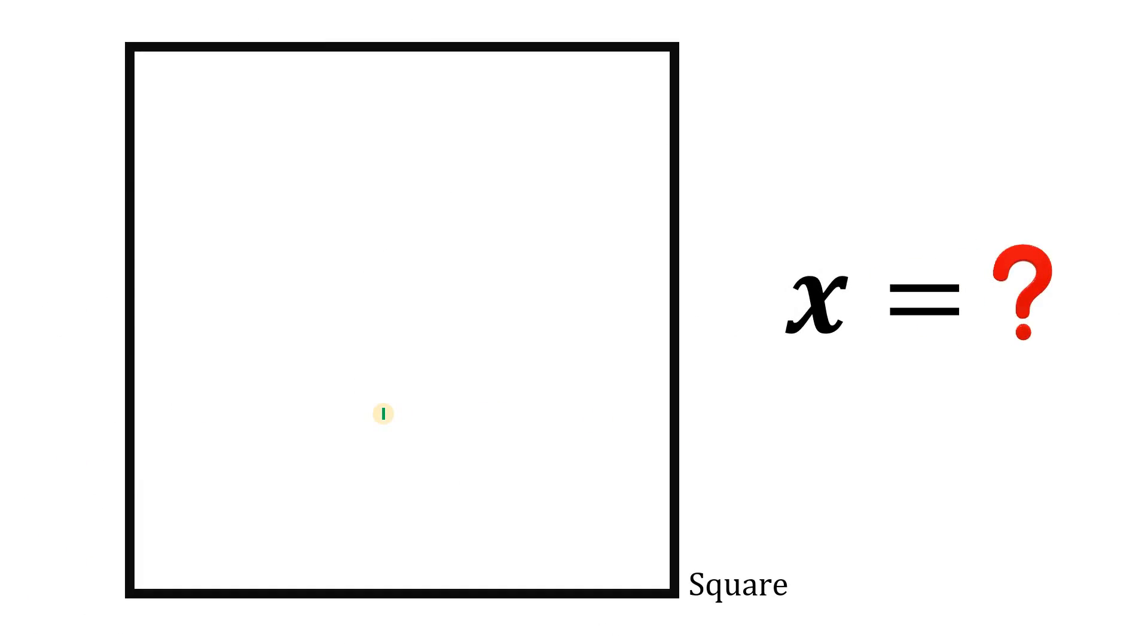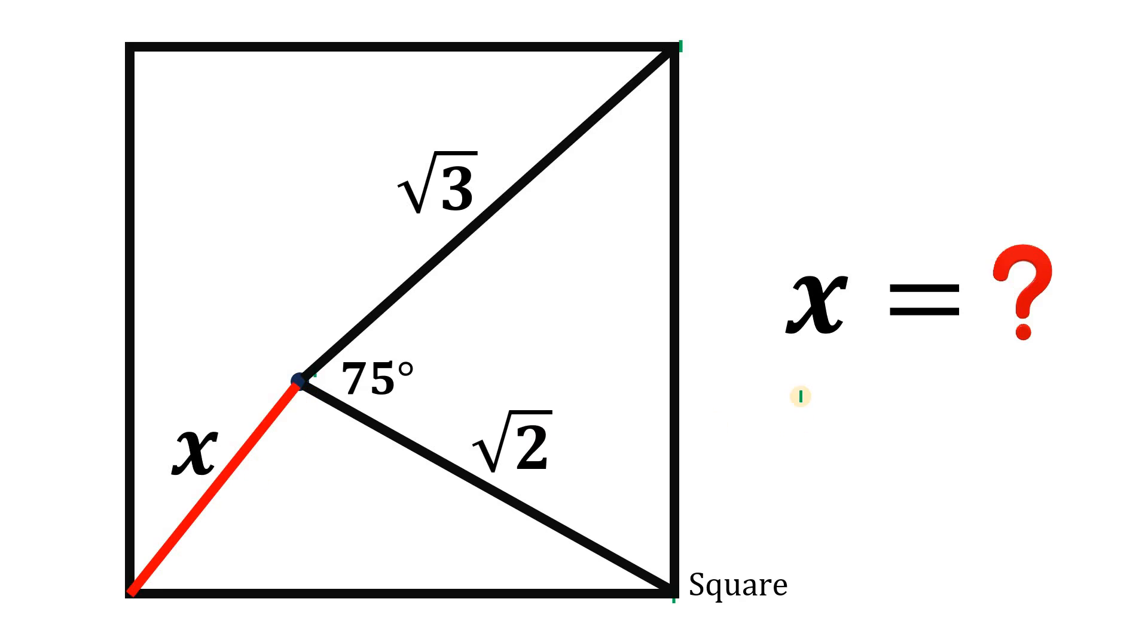Let's start with the square. Now let's have a point inside the square and from this point let's draw two segments connected to these two vertices of our square. This angle right over here is given, which is 75 degrees. Now the length of these two segments are square root of 3 and square root of 2 respectively. Now the goal is this segment, let's call this as x. The question is what is the length of segment x?